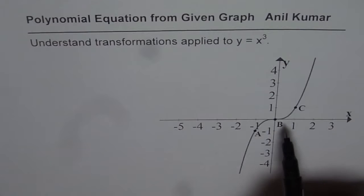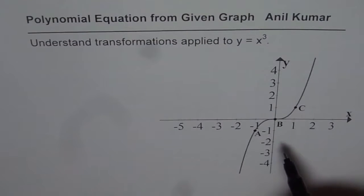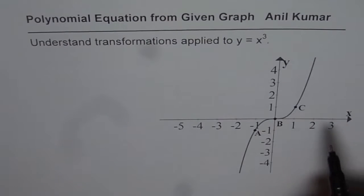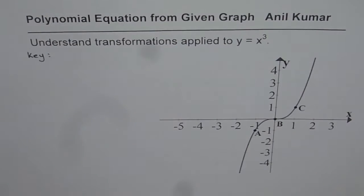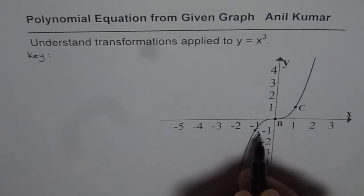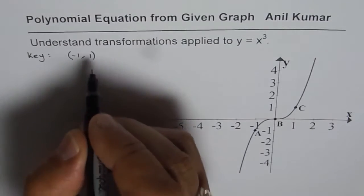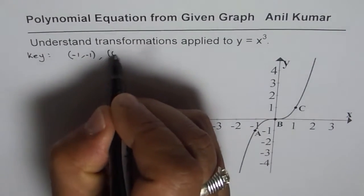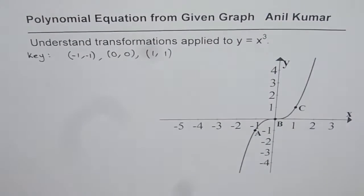What we are given here is a graph of y equals x cubed. Whenever you are considering y equals x cubed, there are some key points which you should always consider to find the equation from the graph or to describe the transformations. We have marked three key points here: minus 1 comma minus 1, then 0 comma 0, and 1 comma 1.